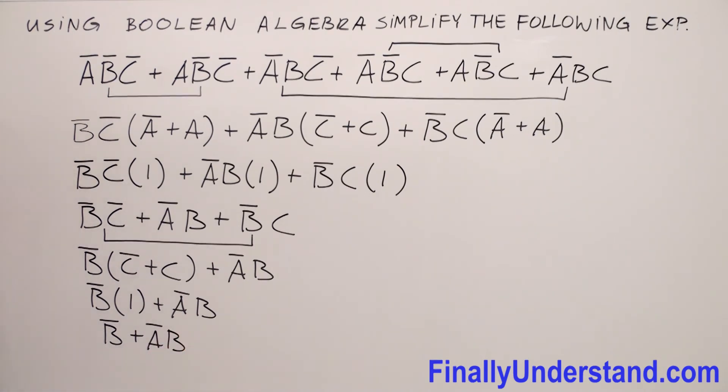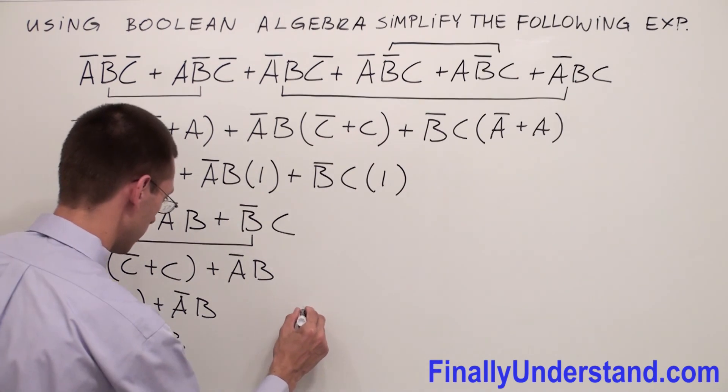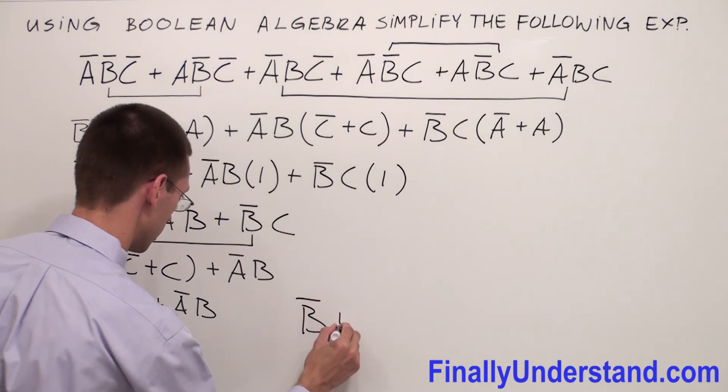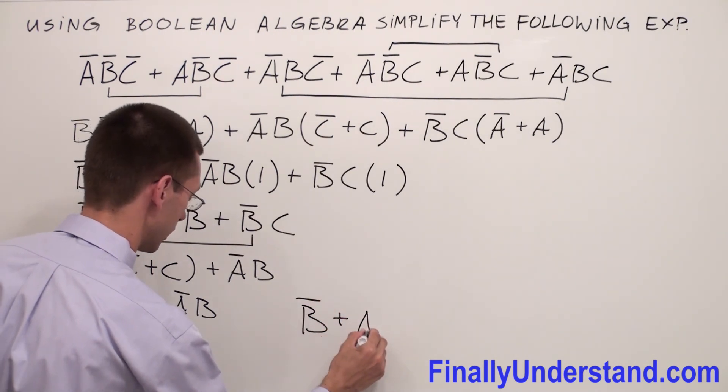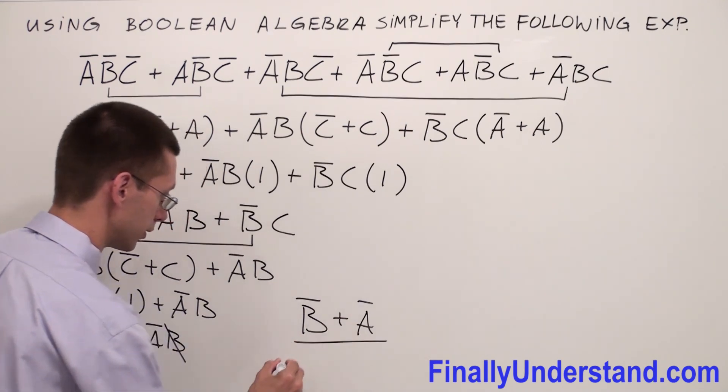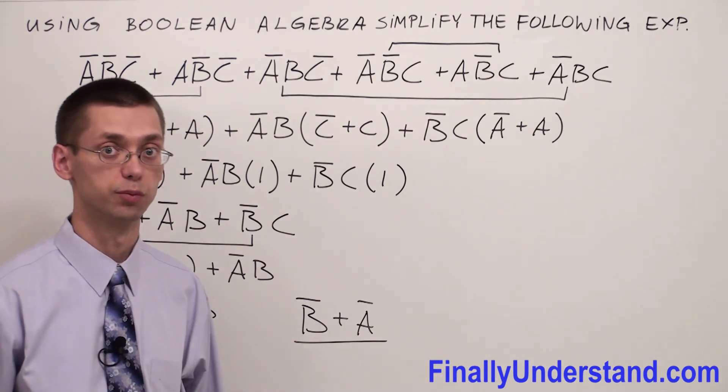At this moment we can apply complement absorption. Complement absorption says anytime we have complements but one of them is anded with something else, that complement can be dropped off. So simply my answer is B̄ plus ĀB̄. This is the solution for the problem.